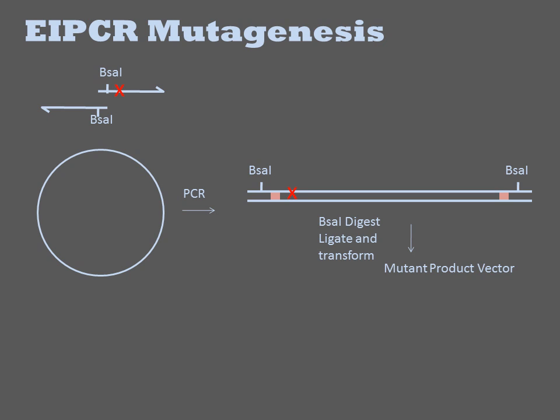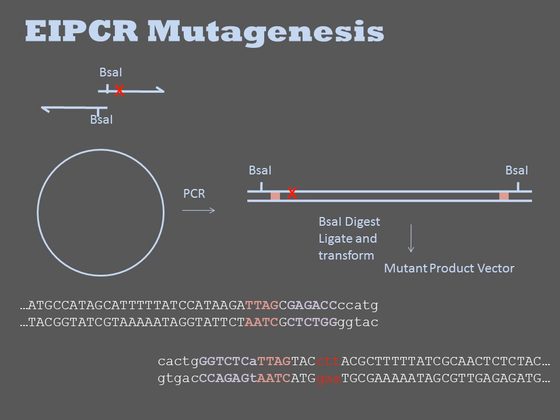EIPCR can be done with conventional type 2 enzymes like EcoRI, and the resulting product will contain the restriction site. Alternatively, it can be done with a type 2S enzyme like BsaI. Because BsaI will cut itself off the ends of the PCR product, it will be absent in the final product. Thus scarless mutagenesis can be performed.